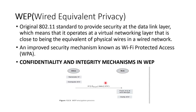First we will see what privacy WEP provides, and if there are any loopholes, those can be overcome using Wi-Fi Protected Access. In WEP, for providing confidentiality and integrity, an encryption process is used. Alice wants to send a message to Bob. For that, an initialization vector (IV) is generated, and an ICV (Integrity Check Value) — similar to a message authentication code — is computed. The data along with the ICV is prepared for transmission.